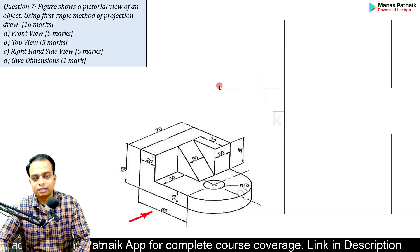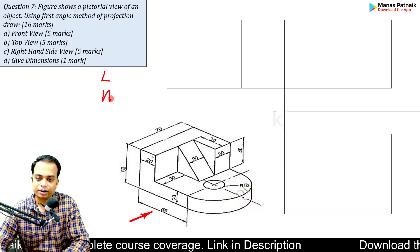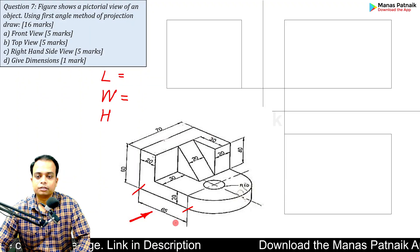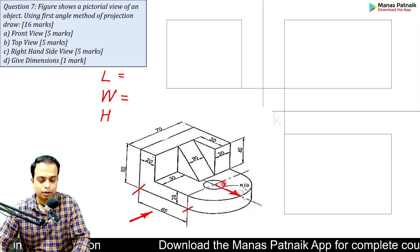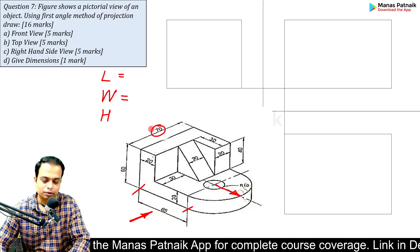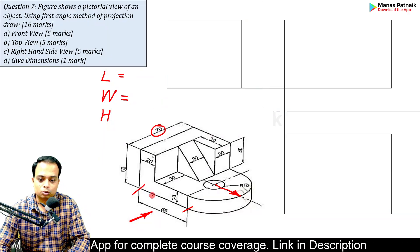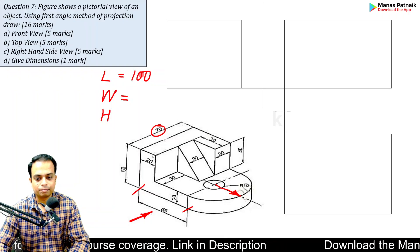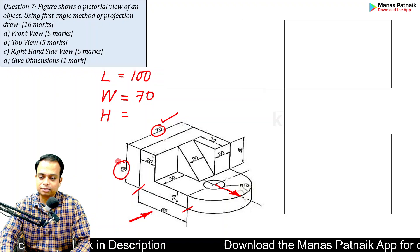The first thing you need to do is determine the length, width, and height. Notice 65 plus the radius gives you the overall length. The diameter is given as 70, so the radius is half, that is 35. So 65 plus 35 gives you 100. The width is 70 and the height has been given as 60.